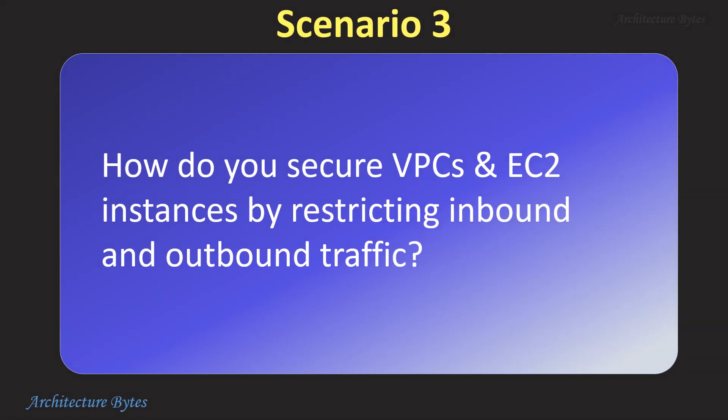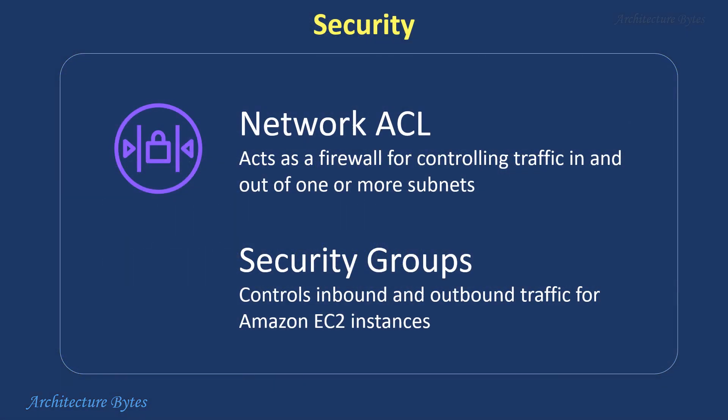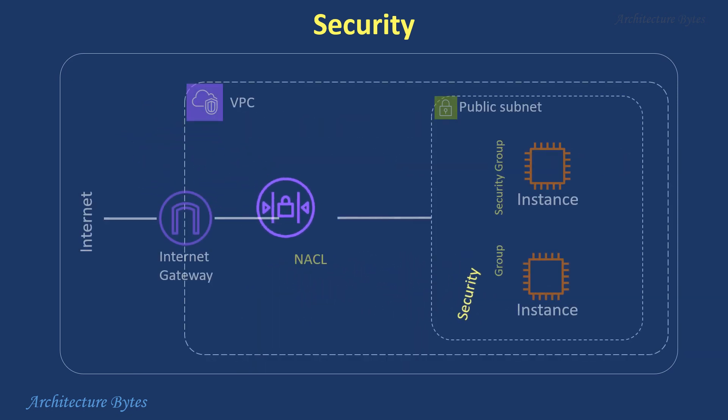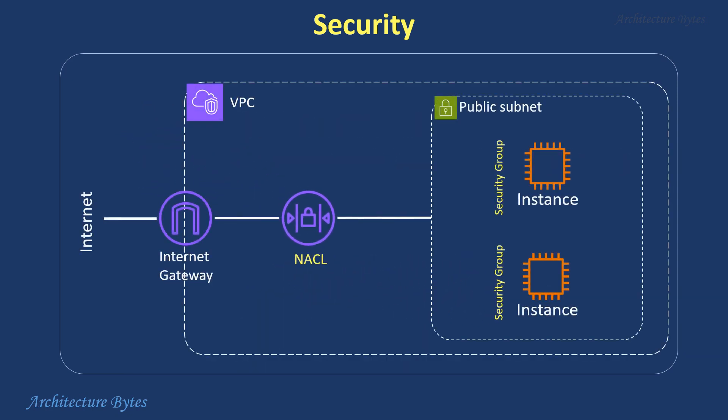How do you secure VPCs and EC2 instances by restricting inbound and outbound traffic? Use network access control lists and security groups to control inbound and outbound traffic at the subnet and instance levels respectively. A network access control list is an optional layer of security for your VPC that acts as a firewall for controlling traffic in and out of one or more subnets.